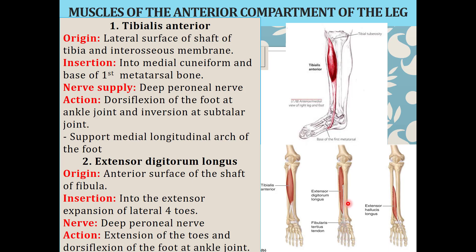The second muscle is extensor digitorum longus. From the name: extensor means it extends, digitorum means digits, and longus means it is a long muscle attached to four toes. It originates from the anterior surface of the shaft of the fibula and is inserted over the extensor expansion of the lateral four toes — second, third, fourth, and fifth. It is innervated by the deep peroneal nerve. Its action is extension of the toes and dorsiflexion of the foot at the ankle joint.